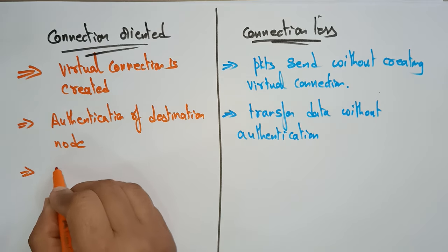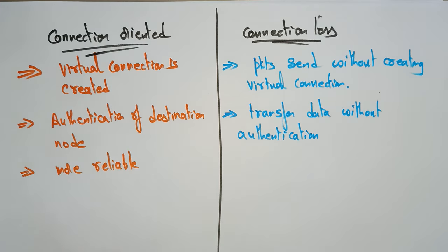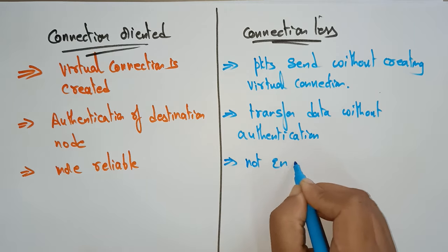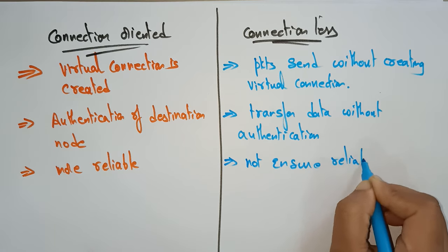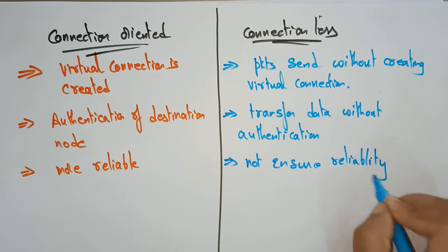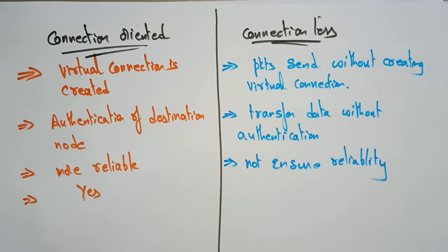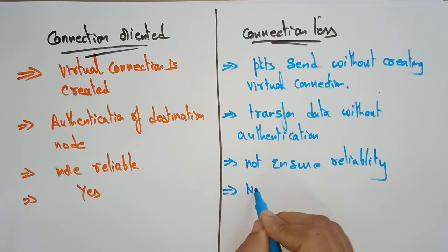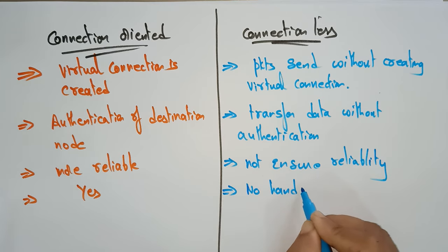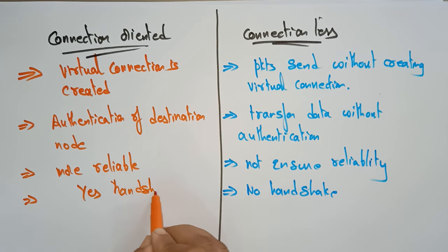Regarding reliability, connection-oriented is more reliable than connectionless. Connectionless does not ensure reliability on transmission of packets. Also, handshaking is possible in connection-oriented, whereas in connectionless there is no handshake.